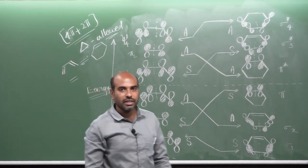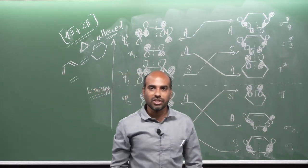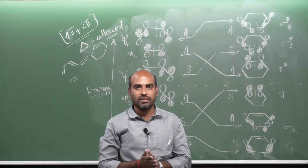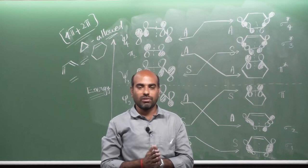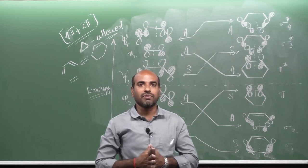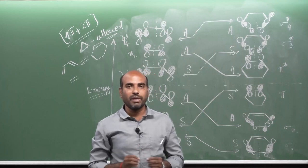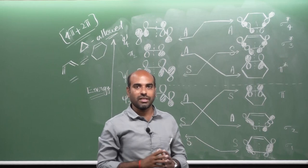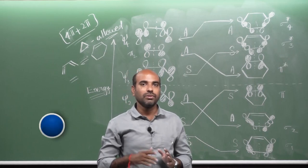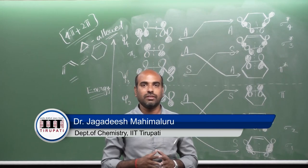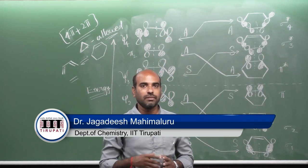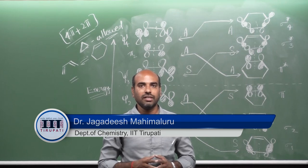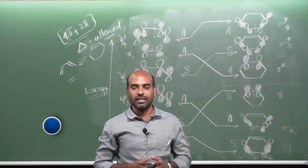In summary, the orbital correlation method confirms that 2π+2π cycloadditions are photochemically allowed and 4π+2π cycloadditions are thermally allowed. You need to be thorough with the orbital correlation theory. Thank you.